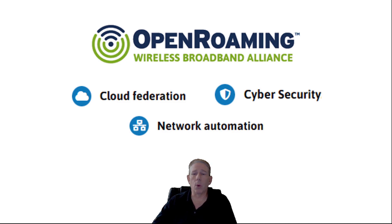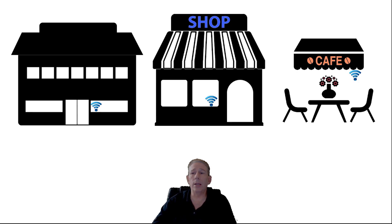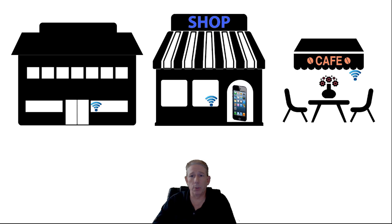The third component is network automation, which allows automatic connectivity for client devices and helps configure things across networks. With Open Roaming, there is no need to have every cellular provider's network configured within your authentication profiles for each location. Once a client device securely onboards with any member network, they can roam to any other member network successfully, provided there is ample coverage, without having to go through the entire onboarding process again.